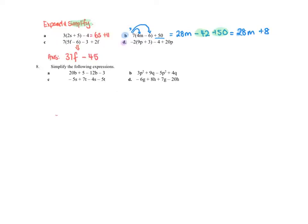These ones are a little bit more involved, so I'm going to do another one. So I'm going to do this one. So first I'm going to expand the brackets. So I've got negative 2 times 9p will be negative 18p. Negative 2 times 3 is negative 6. Then I write the rest of what's there, which was minus 4 plus 20p.